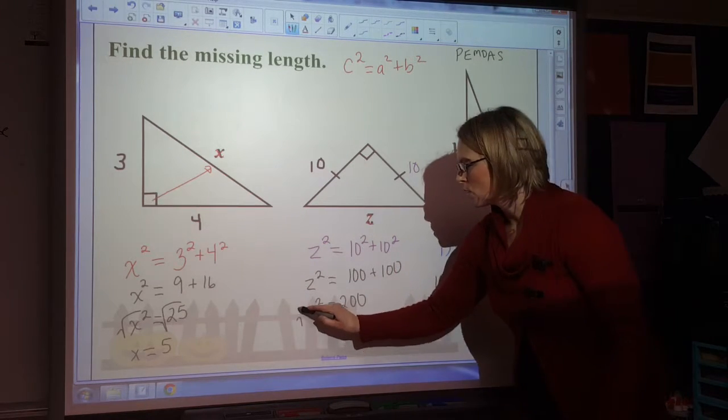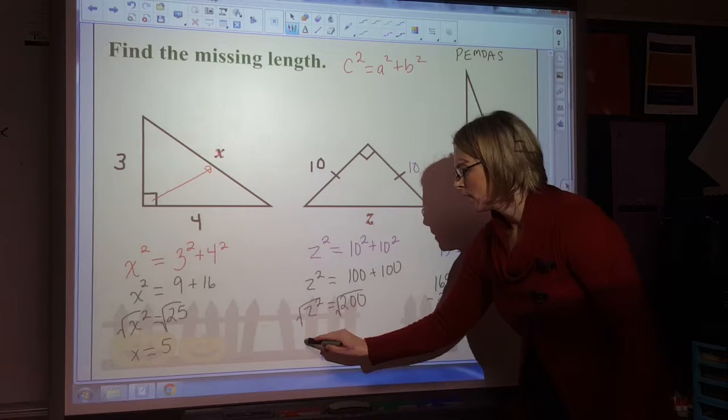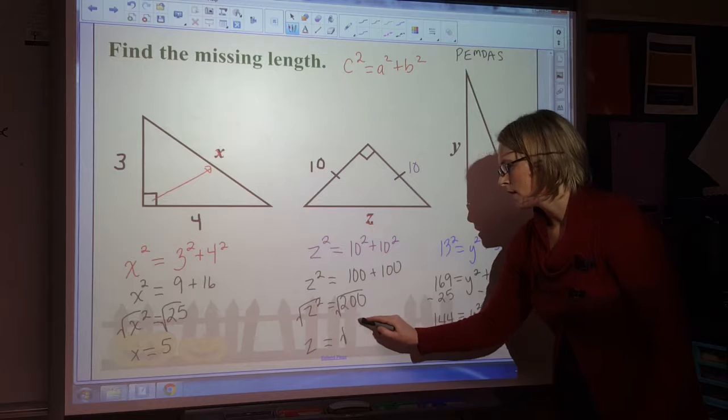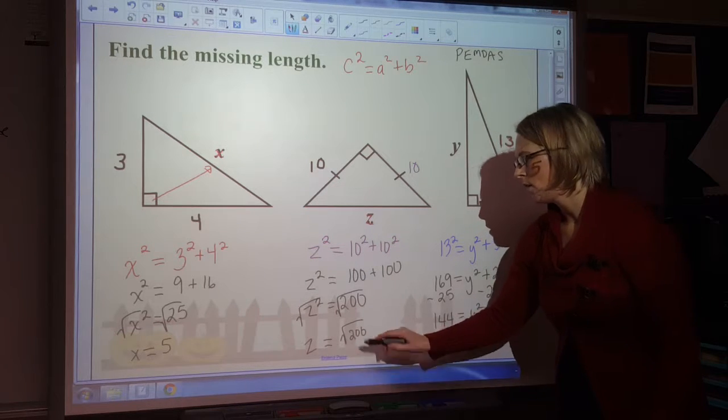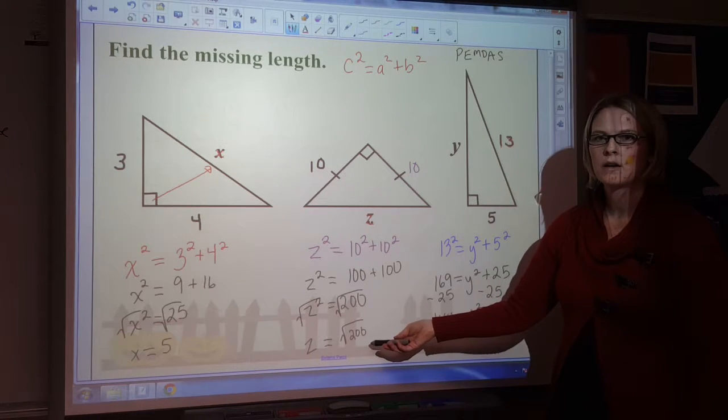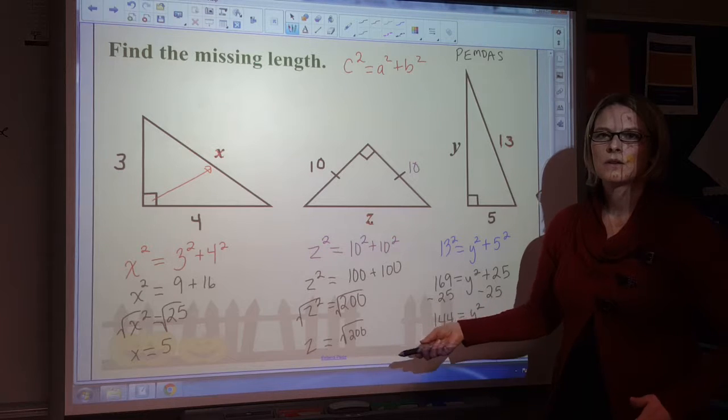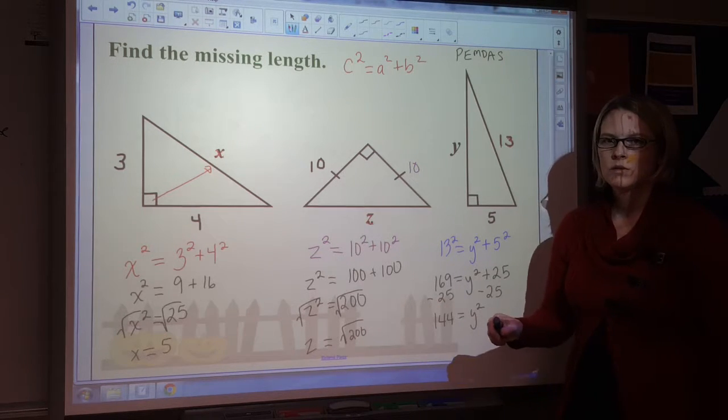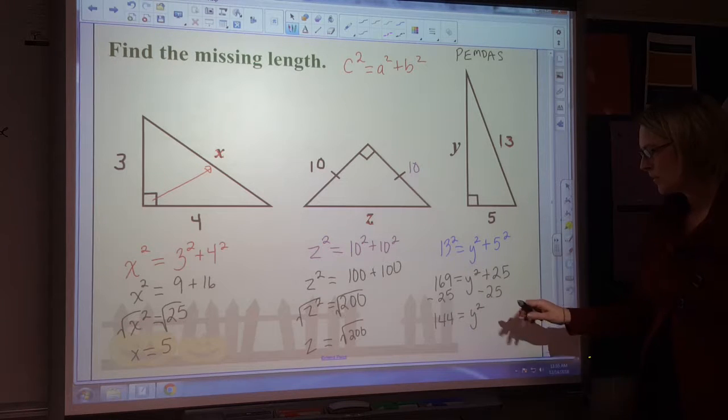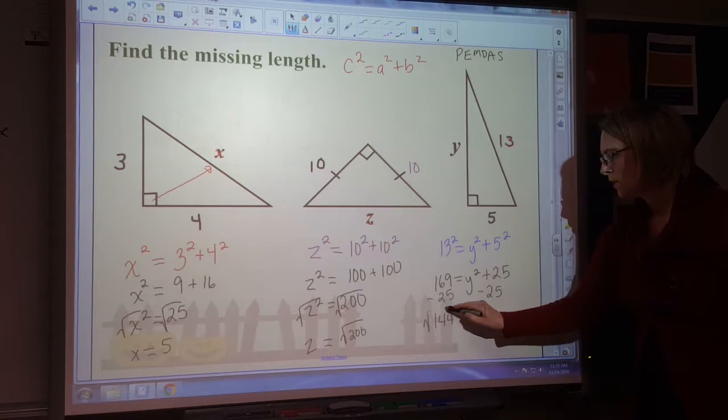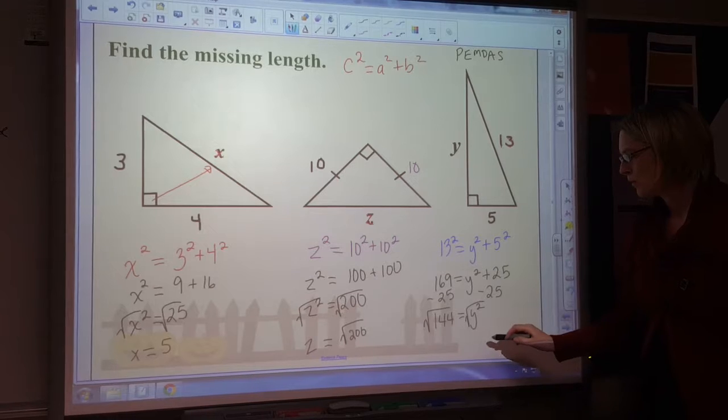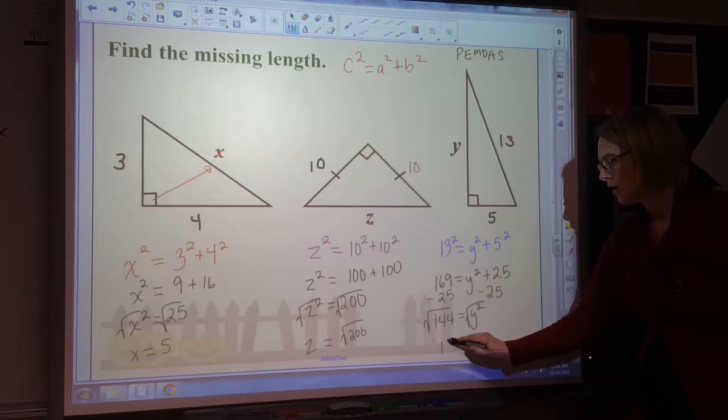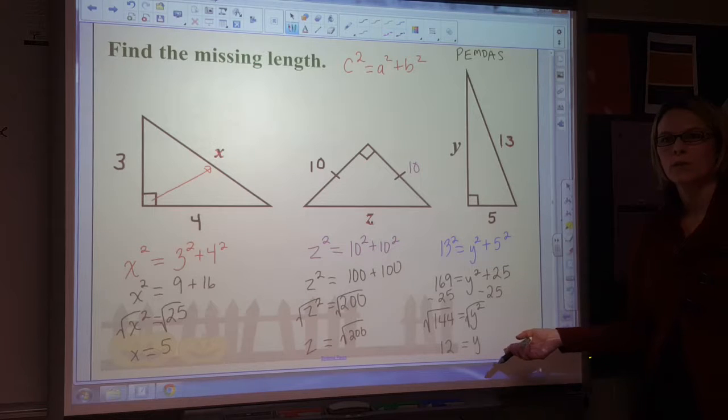So for this one, I'm going to take the square root of both sides. And so z is going to equal, I'm going to leave this as the square root of 200 for right now because there's not a perfect square. There's not a number that's an integer or a whole number when multiplied by itself gives you 200. So I'm just going to jump to this one. So if I take the square root of 144 and the square root of y squared, I get y equals 12. So it's 12 or negative 12, but I'm going to keep the 12.